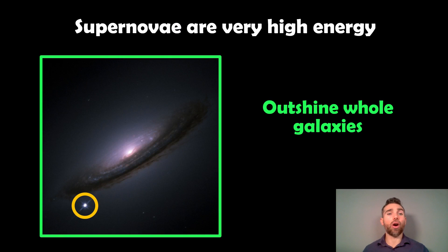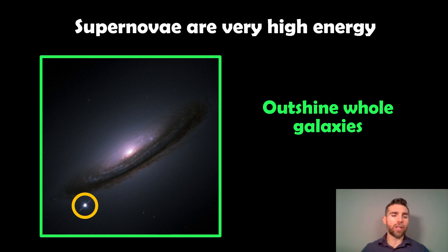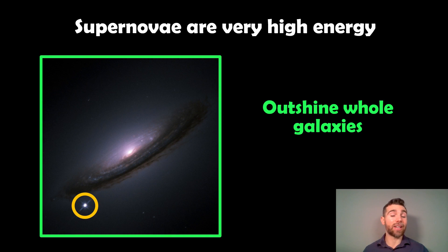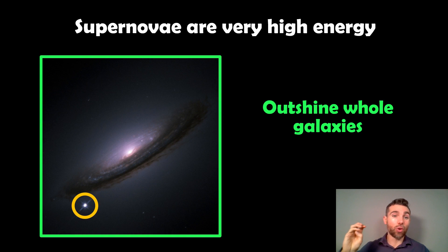Supernovas are very high energy — they're some of the most energetic events we have in the universe and they can outshine whole galaxies. Here you've got a supernova occurring in a spiral galaxy on the outer parts, and luminosity-wise it can appear brighter than the actual galaxy itself. Bearing in mind the size difference is huge — a supernova is a very small object compared to something that's hundreds of billions times more massive.